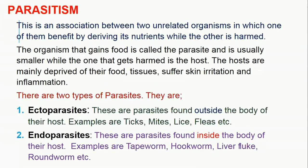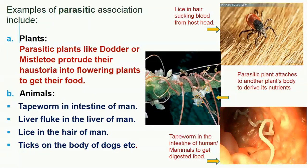Two, endoparasites — 'endo' stands for inside — these are parasites found inside the body of their hosts; examples are tapeworm, hookworm, liver fluke, and roundworm. Examples of parasitic association in plants include parasitic plants like dodder or mistletoe, which project their haustoria into flowering plants to get their food. Looking at the image, you can see the parasites twist around the bigger plants and project their haustoria into the body of the flowering plant to extract nutrients. That is parasitic.